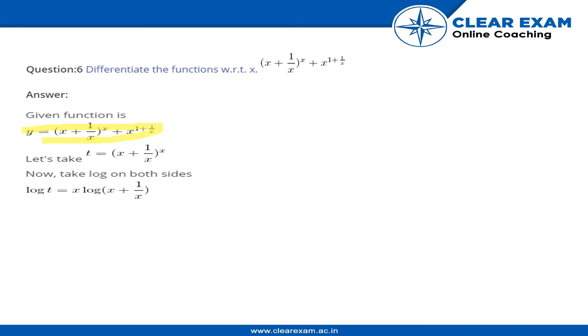Take the first term. Suppose t equals (x + 1/x)^x. Take natural logarithm on both sides, hence you get log t equals x·log(x + 1/x).